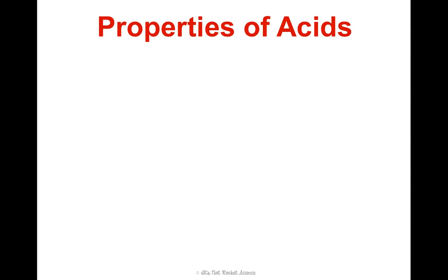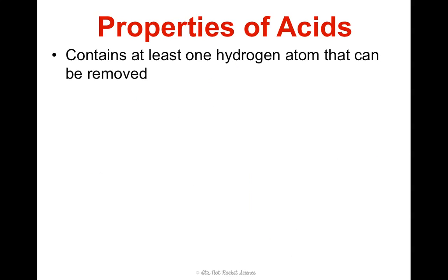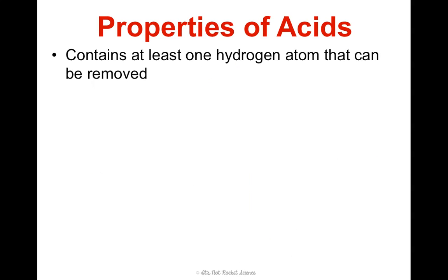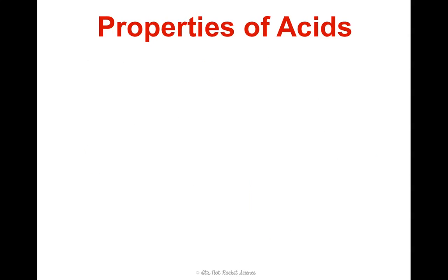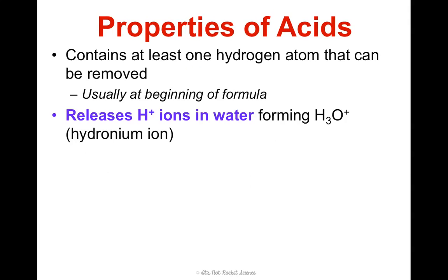All acids tend to have similar properties. One is that they always have at least one hydrogen atom that could be removed or given off, and usually you can see it at the beginning of the formula, which you may have noticed for each of these. They release hydrogen ions in water, so they form H3O+, which is a hydronium ion, which you'll learn way more about in chemistry.